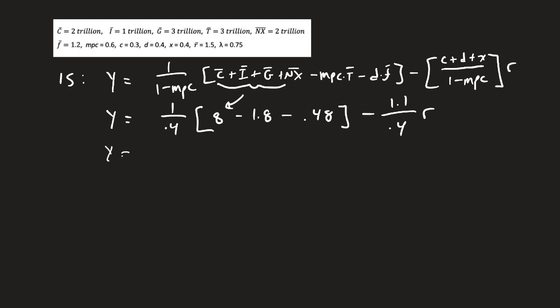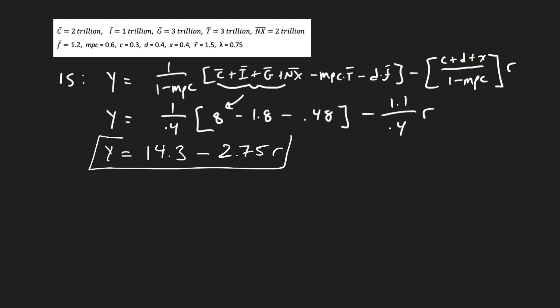Now let's clean this up. We know 1 over 0.4 is 2.5, so 8 minus 1.8 minus 0.48 times 2.5 gives us 14.3. Then 1.1 divided by 0.4 equals 2.75. So our IS equation is Y equals 14.3 minus 2.75 times R.